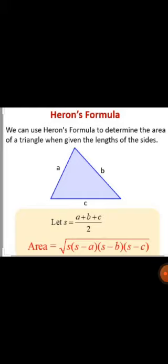For example, in the given figure you can see that sides A, B, and C are the three sides of a triangle. We have to find the area of this triangle using the formula: Area of triangle = √(S × (S−A) × (S−B) × (S−C)), where A, B, and C are the sides of the triangle and S is the semi-perimeter.